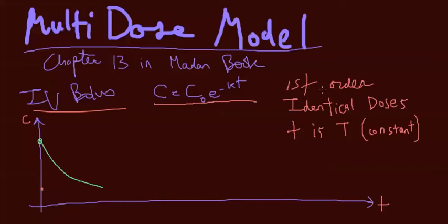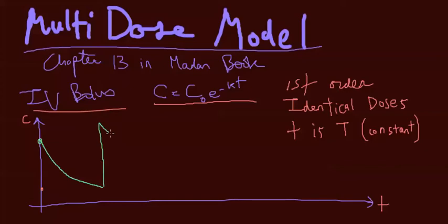We're going to assume a couple of things: first, that it's first order — IV bolus is a first-order reaction. And second, we're going to assume that all doses after the first one are identical. So it's not going to be erratic; it's going to be pretty uniform, like that.